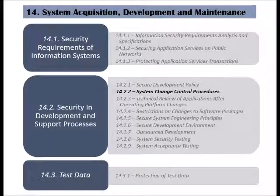The second control of the security in development and support processes category is called system change control procedures. Change could happen for many reasons, but to make sure that it is successful and improves the information systems and processes, it has to be controlled through formal change procedures.